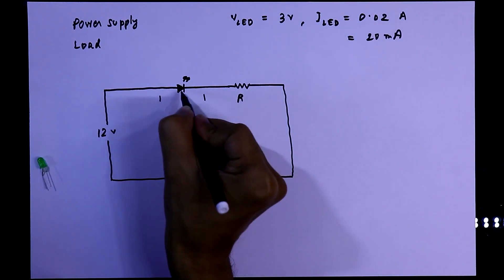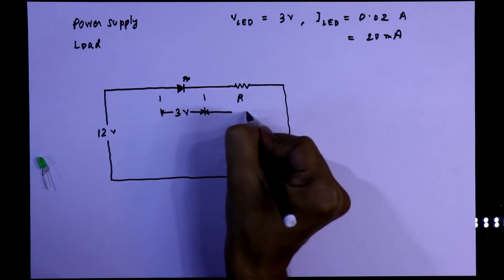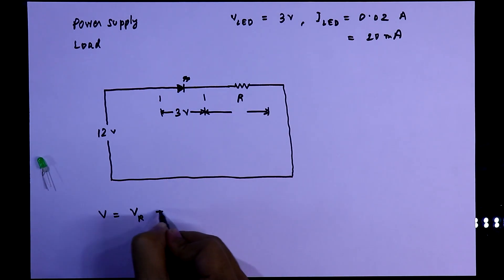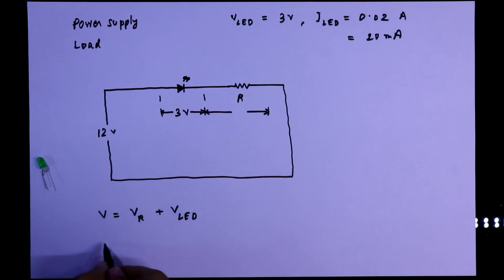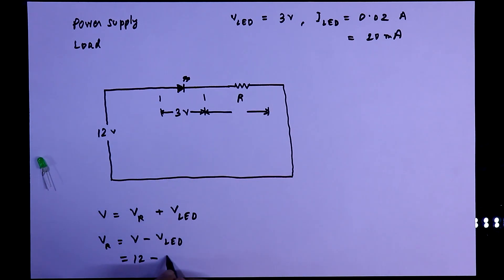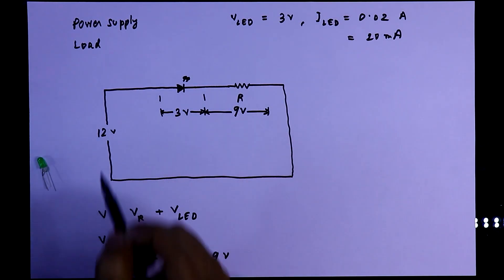Voltage drop in LED is 3V and voltage drop in resistor will be V equals Vr plus VLED. So to find out the voltage drop at resistor, V minus VLED. V is 12V and VLED is 3V, so it is 9V. So 9 plus 3, it is 12V.